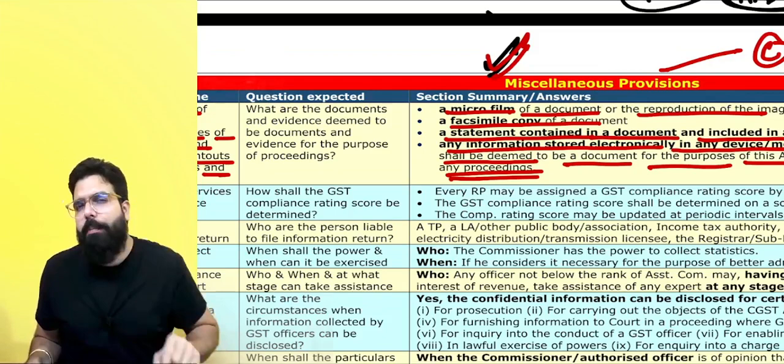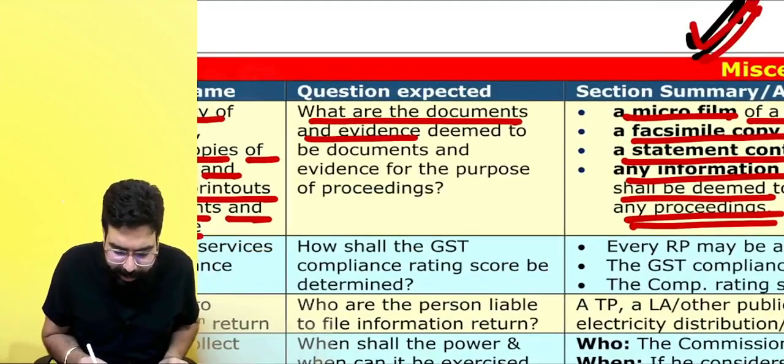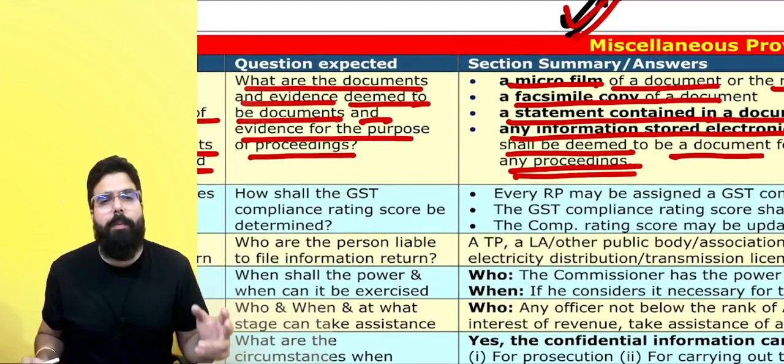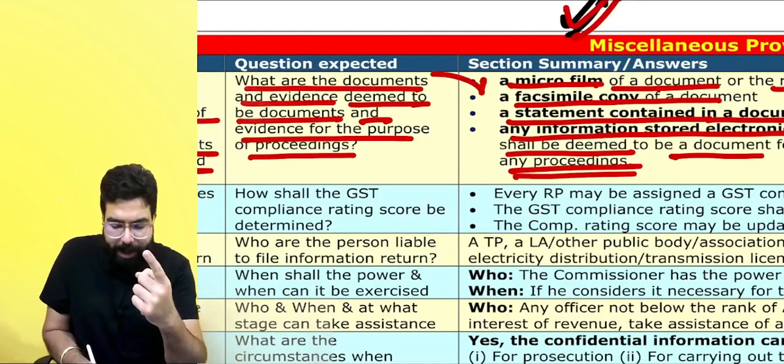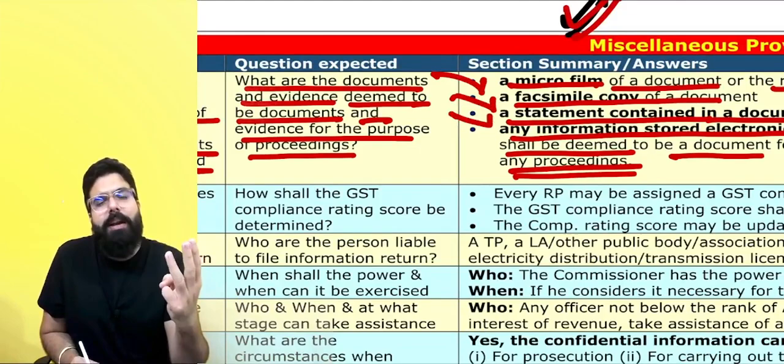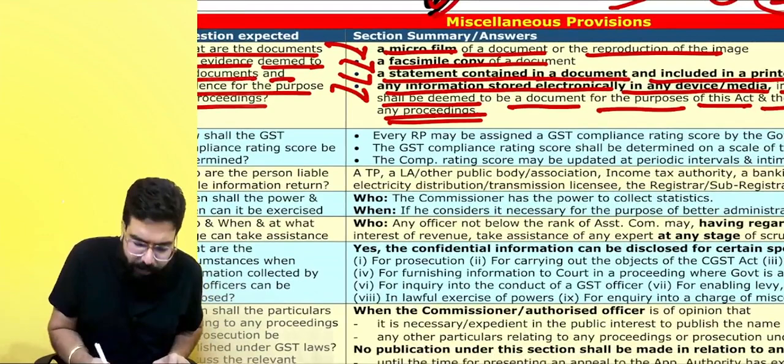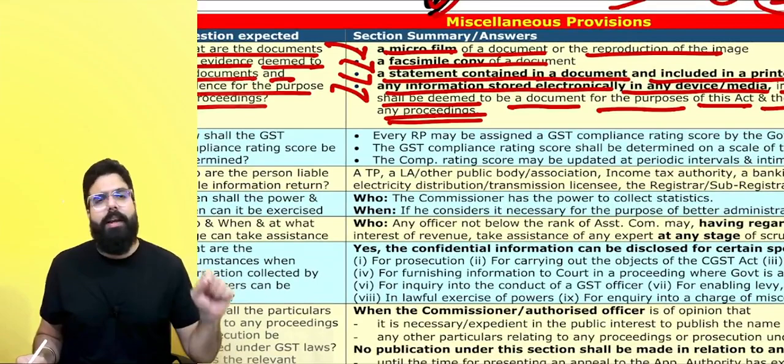Exam question: What are the documents and evidences deemed to be documents and evidence for the purpose of this act? A microfilm, a facsimile copy or a statement contained in a document including a computer printout, or any information in a pen drive, hard disk, etc. is always deemed as a document and evidence and can be admitted as evidence in a proceeding.